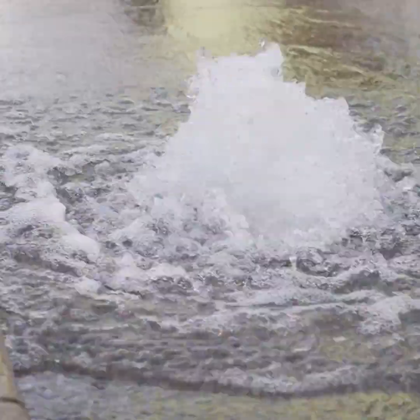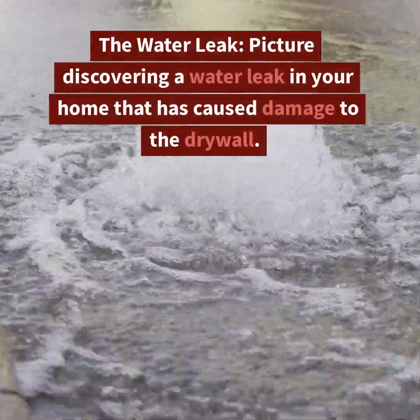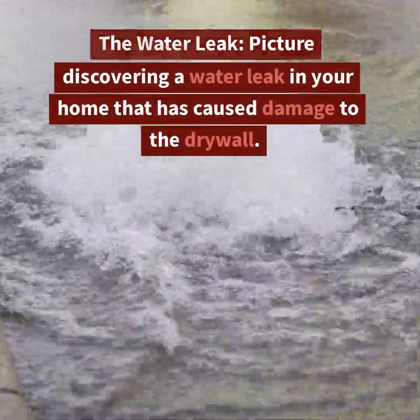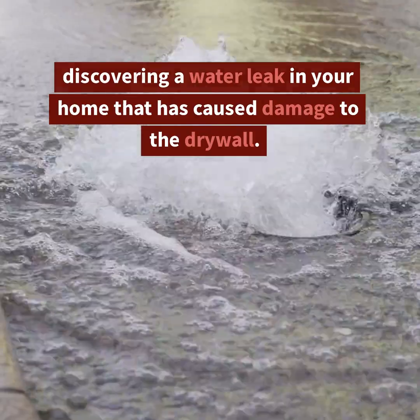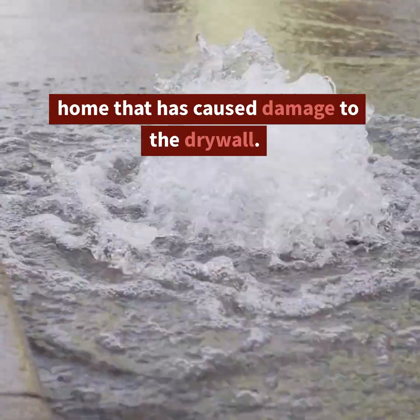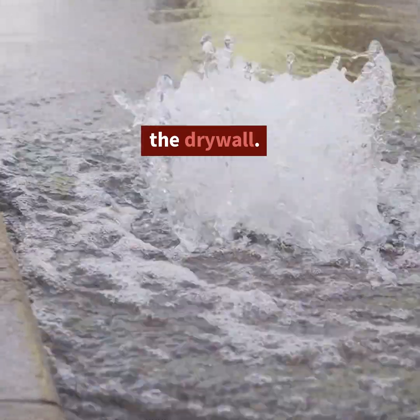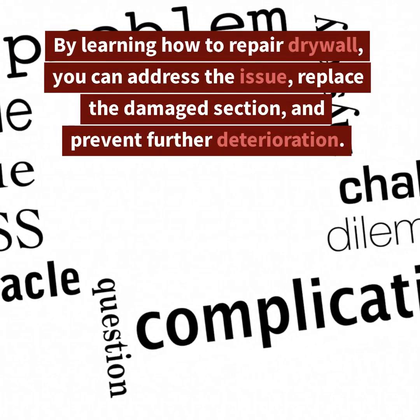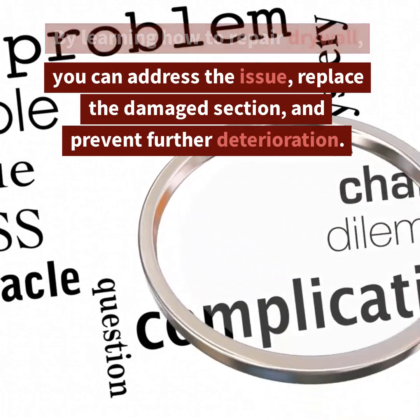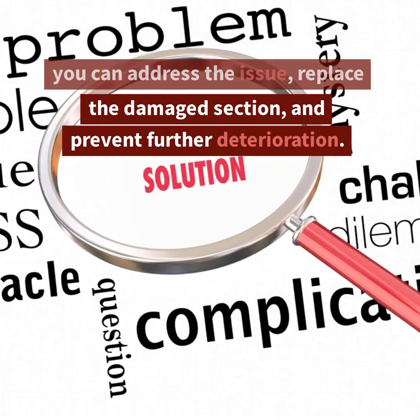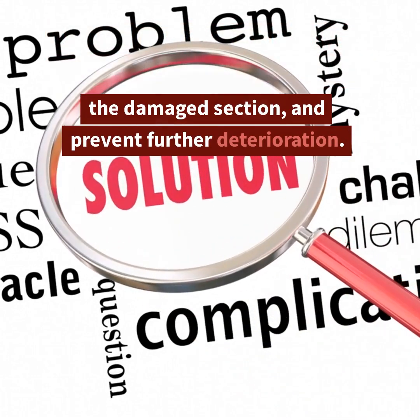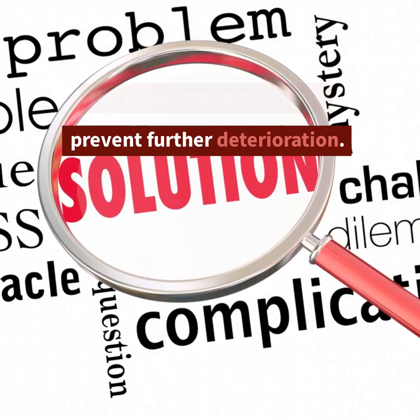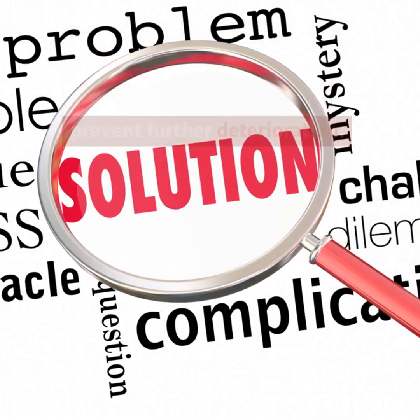2. The Water Leak. Picture discovering a water leak in your home that has caused damage to the drywall. By learning how to repair drywall, you can address the issue, replace the damaged section, and prevent further deterioration.